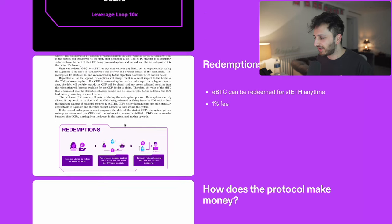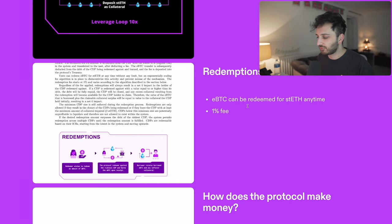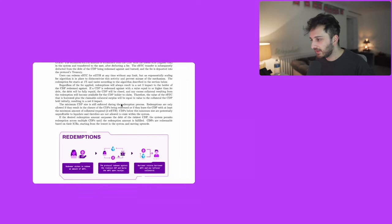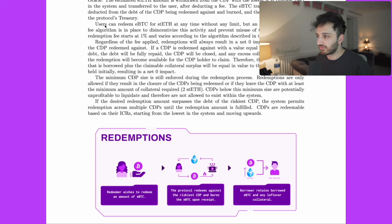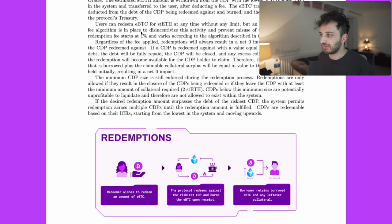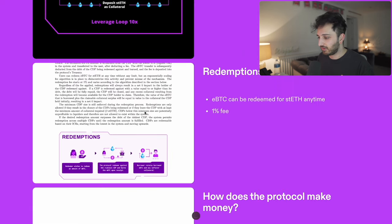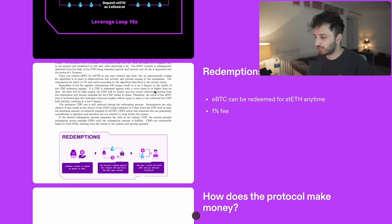Let's talk about redemptions. If you want to take your EBTC and redeem it for the underlying, you can do so at any time. There is a fee — users can redeem EBTC for stETH at any time without any limit, but an exponentially scaling fee algorithm is in place to disincentivize this activity and prevent misuse of the mechanism. The redemption fee starts at 1% and can vary over time.